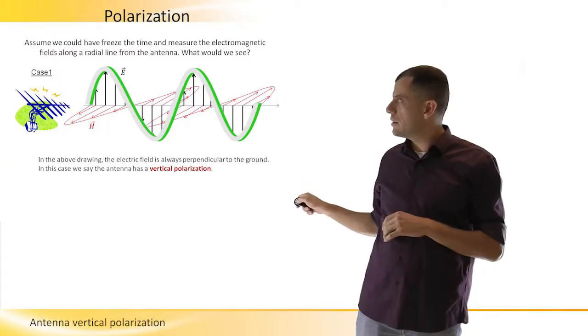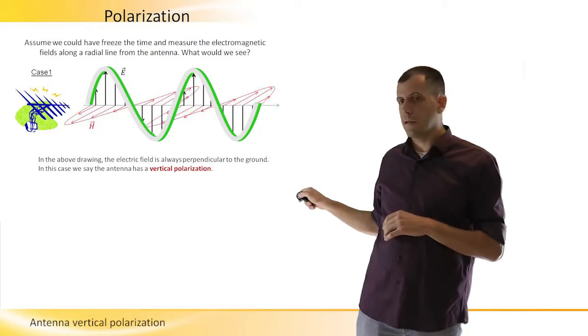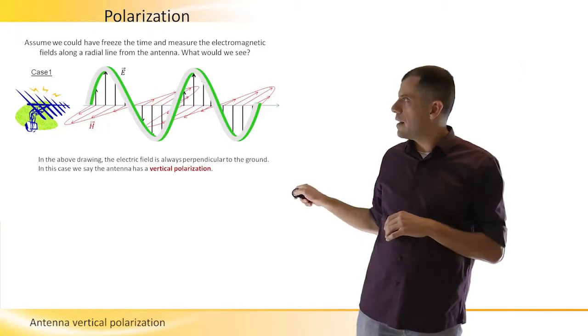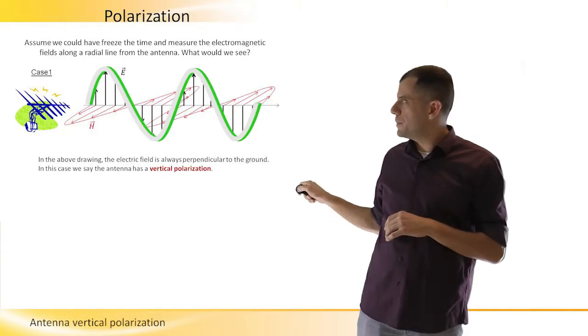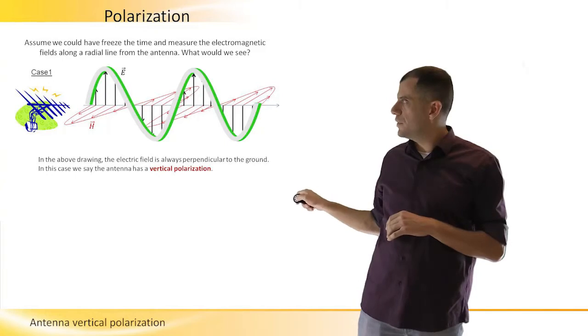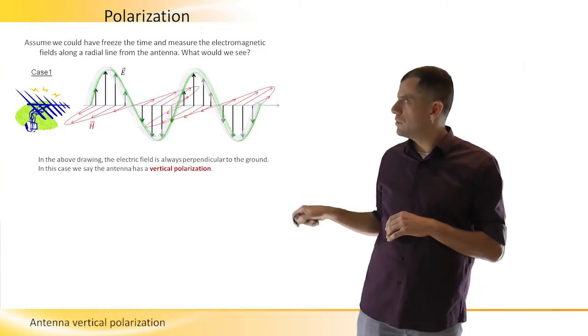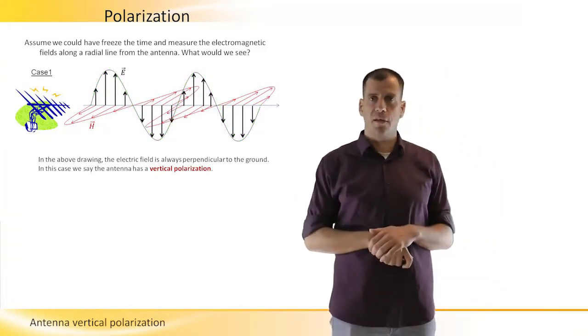The only thing that changes is the magnitude of the arrows. And the direction up or down doesn't really matter because down is a minus of the same size that goes up. So they stay perpendicular to the ground, the electric field. And if the electric field stays perpendicular to the ground, we call this polarization vertical.